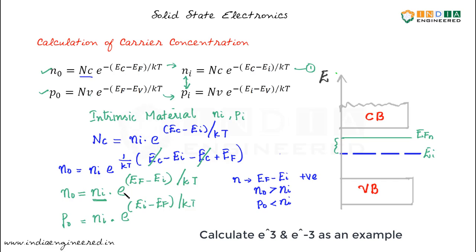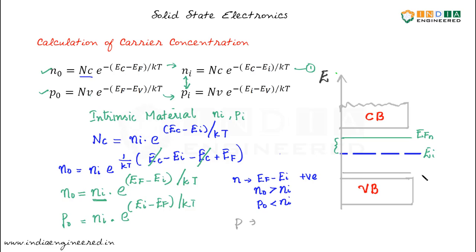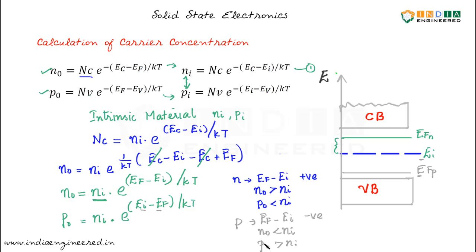You can use this information to check whether you have got the right equations. In the case of P type material, the Fermi level is somewhere below. Here, Ef minus Ei will be negative, meaning N0 will decrease compared to Ni — N0 will be less than Ni — and Ei minus Ef will be positive, so P0 will be greater. N type material is called so because the majority carriers are electrons, so N0 is greater than P0. In P type material, the number of holes is greater than the number of free electrons.